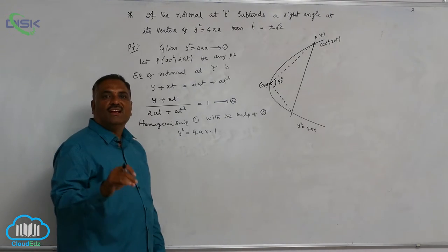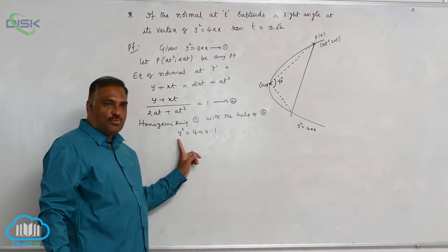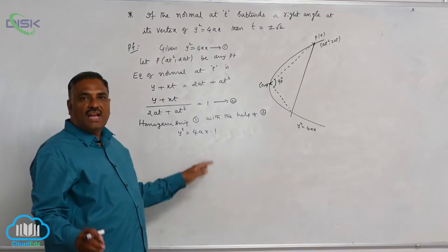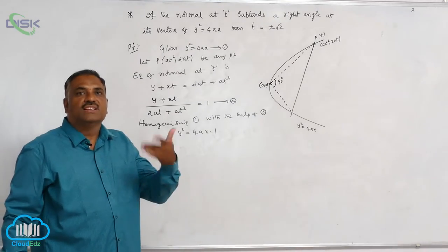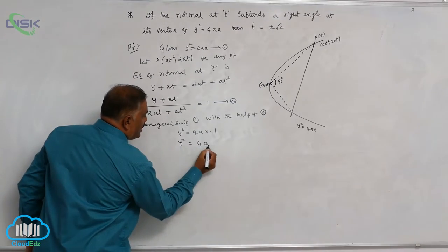Homogenization means making the degree of each and every term same. The highest degree is 2. RHS part, we are having only 1st degree. We have to raise to the 2nd degree.